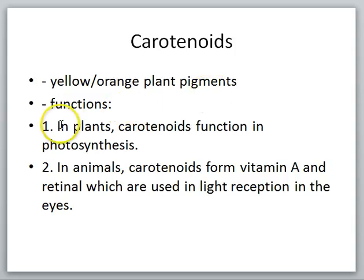And the functions of the carotenoids. In plants, carotenoids are going to play a role in photosynthesis. And then we don't produce carotenoids, but we definitely consume a lot of them. Anytime we consume plant materials, even green leafy plant materials are going to be rich in carotenoids. We just can't see them because of all the green chlorophyll. So, the carotenoids, after we consume them, are going to form vitamin A and another compound called retinol, which is used in light reception in the eyes.